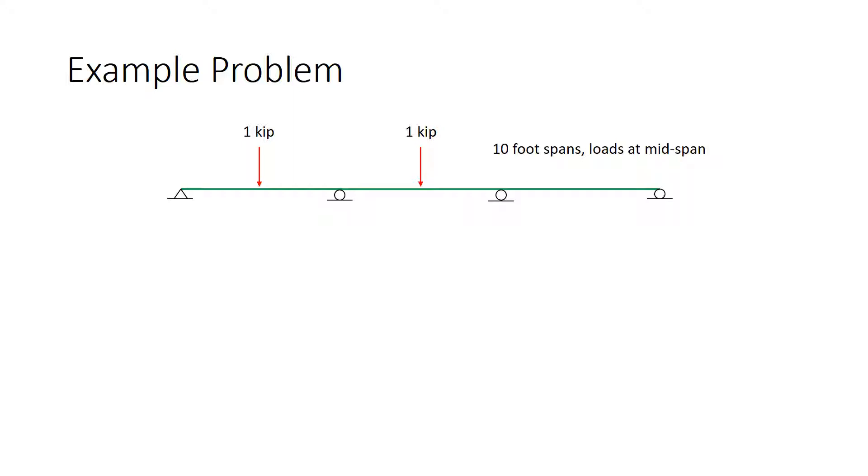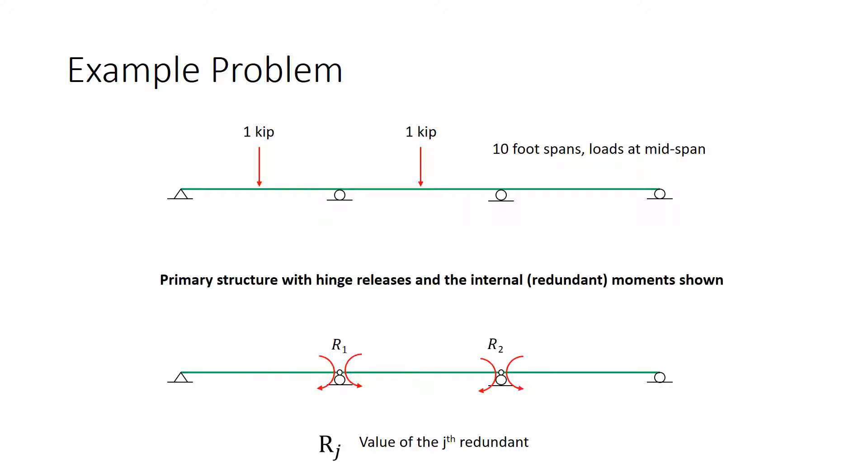In the flexibility method, we need to choose a primary structure. The primary structure that I'm using for this problem is one that has hinge releases above the supports. The primary structure is shown here, along with the redundant internal moments that are labeled R1 and R2. R is the notation that we use for the redundant forces, be they forces or moments, and the subscript numbers them so that we can keep track of our work.